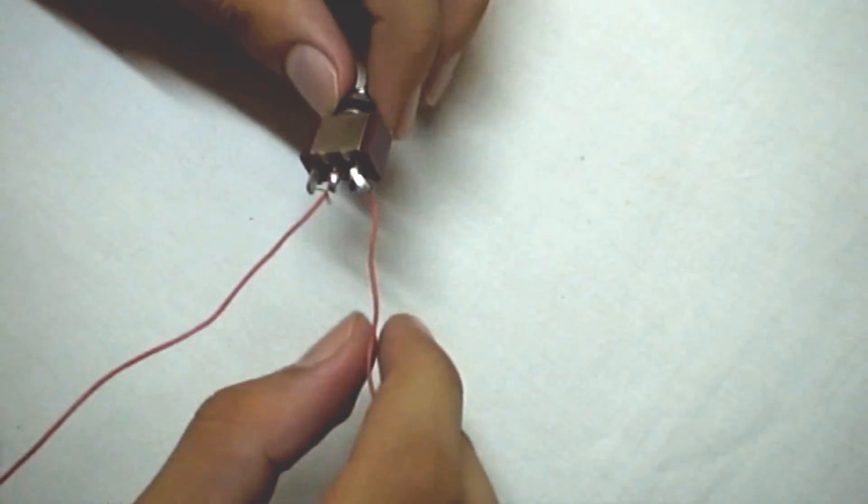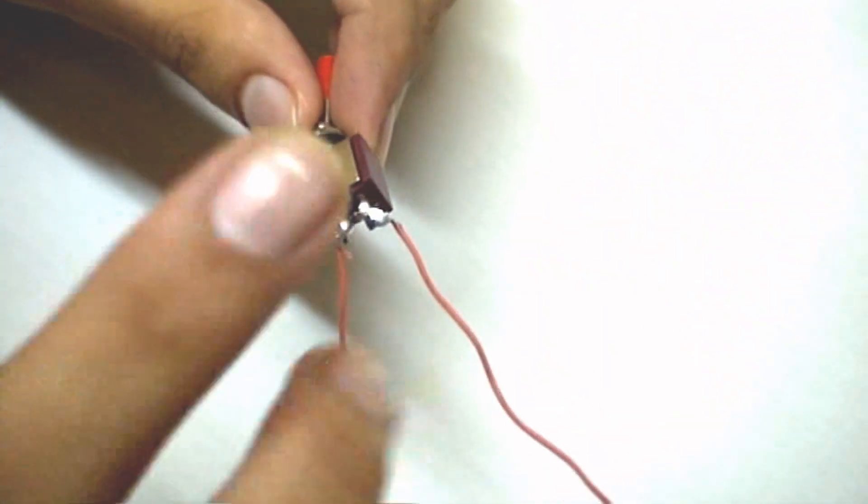You need to solder two wires from the two terminals. We won't be needing the third terminal.